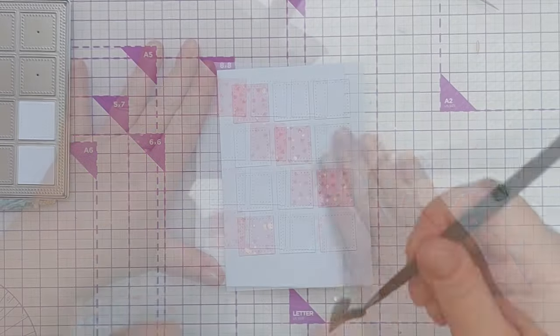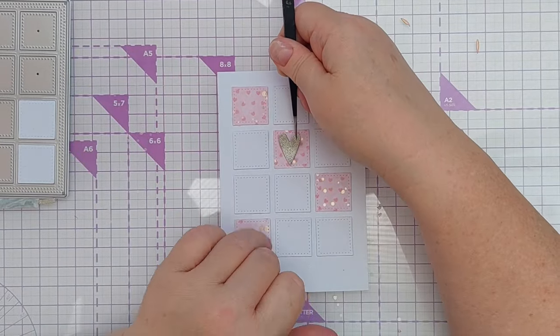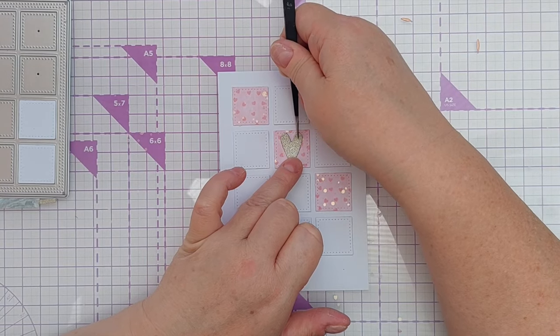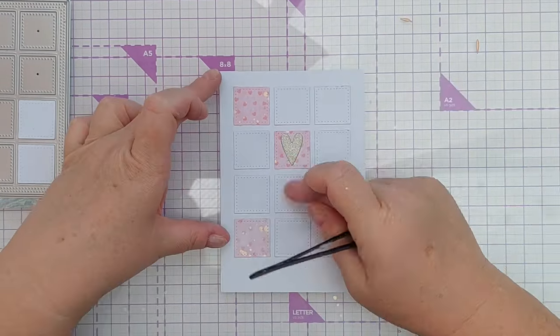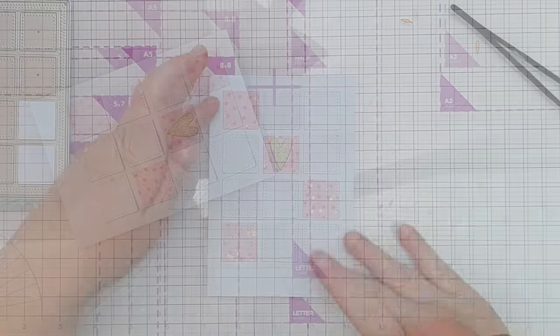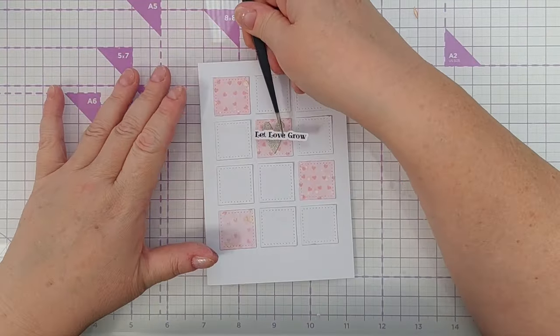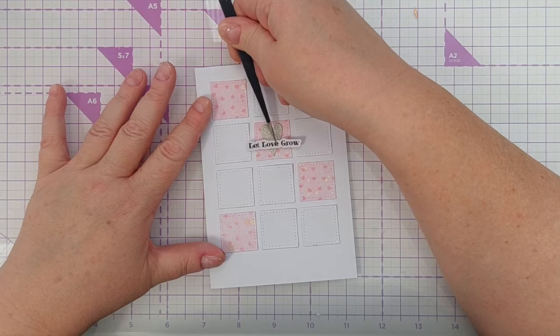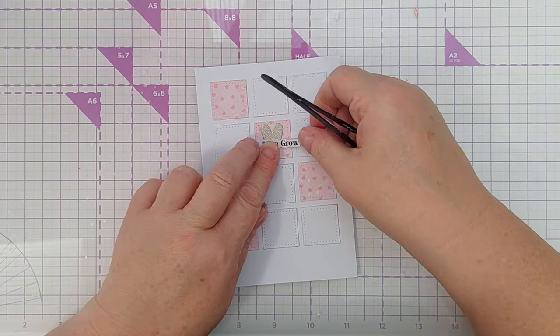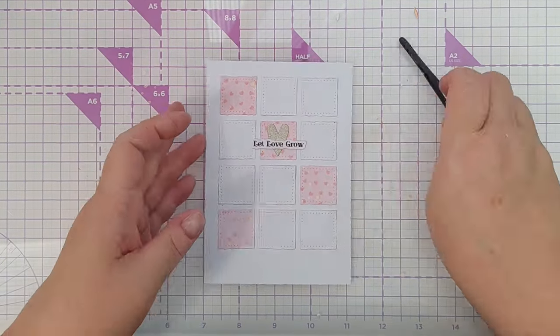To decorate this card I added a pale gold glitter heart again in the middle of the second row down just to bring in a bit of balance and then I added another print and cut sentiment that says let love grow. I guess this sentiment would work for other occasions too not just weddings.